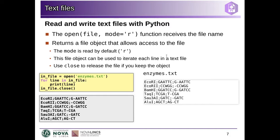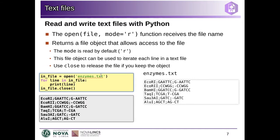One way of doing this — the way we're going to do it always — is using the open function, which returns an object that has access to the file. By default, the mode in which we open a file is read mode — that's the 'r'. So if we do something like open('enzymes.txt'), then this is opened in read mode. This means we can use this object that open returned to read from the file.